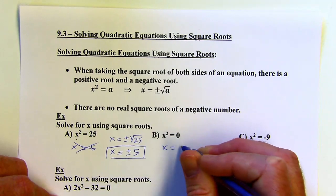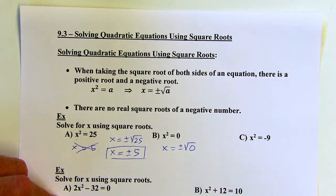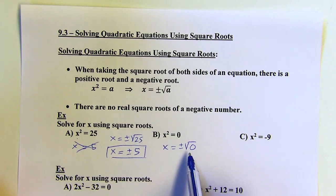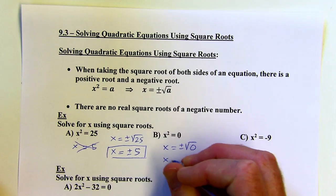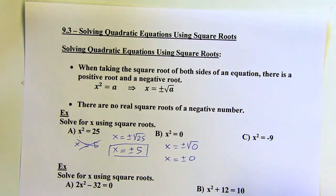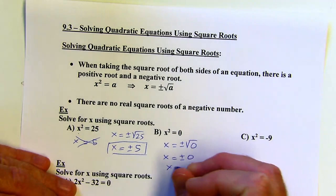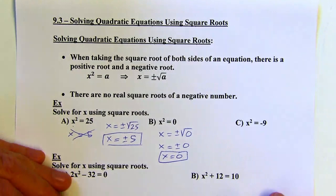To get x, I'm going to take the positive and negative square root of 0. And 0 times 0 is 0 — that's the only thing times itself that equals 0. So I'm going to get positive or negative 0, but there is no positive or negative 0, there's just 0. So this only has one solution.